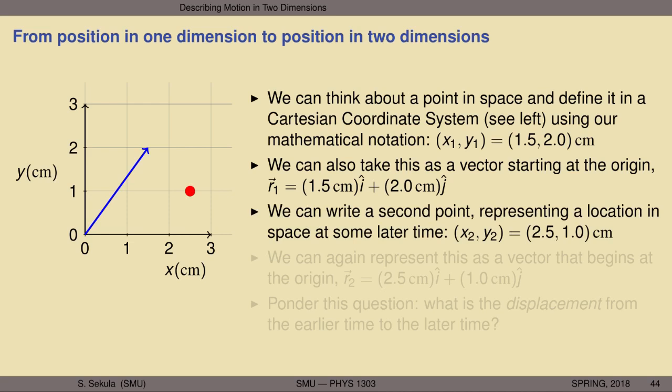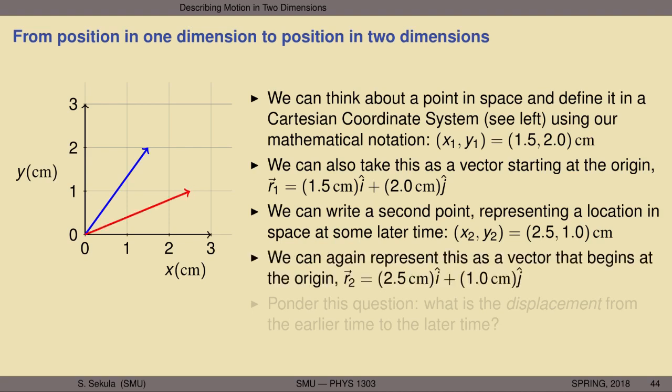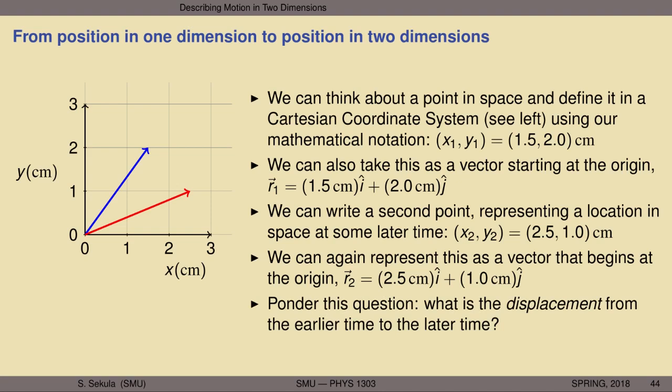We can write a second point representing the position of the same object at a later time t₂. We denote this location as (x₂, y₂). Reading off the graph, the object is now at 2.5 cm comma 1 cm in x-y coordinates. This is again represented as a vector drawn in red — an arrow beginning at the origin with components taken directly from the coordinate location of the point where the arrowhead ends.